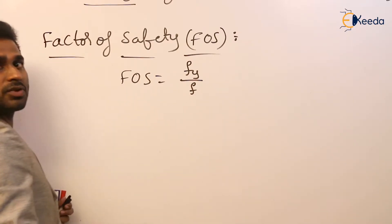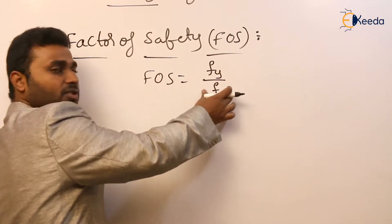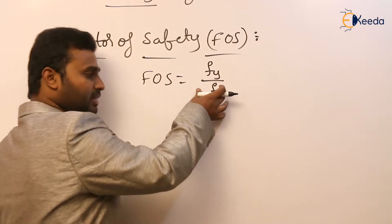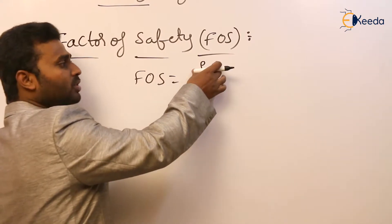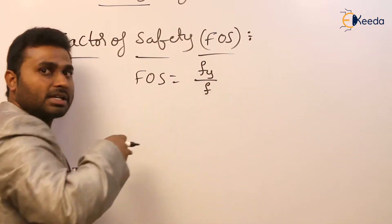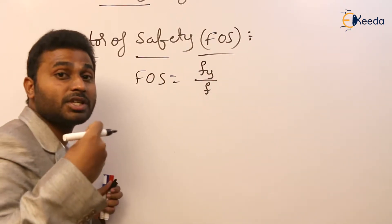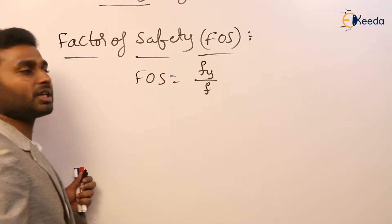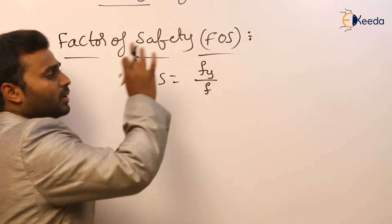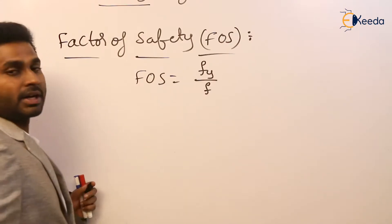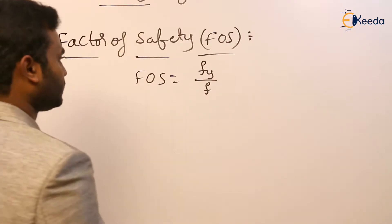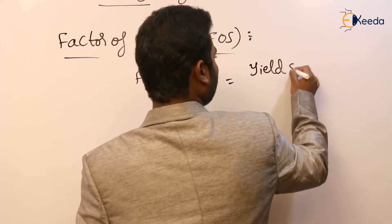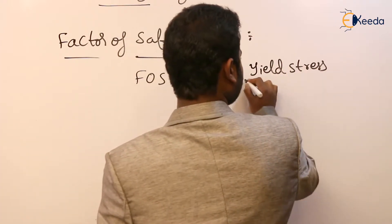We have discussed what yield stress and working stress are. If the load is less, that is the working stress. If the load is more and the extreme fibers reach the yield state, then it is known as yield stress. Factor of safety is nothing but the ratio of yield stress to working stress.